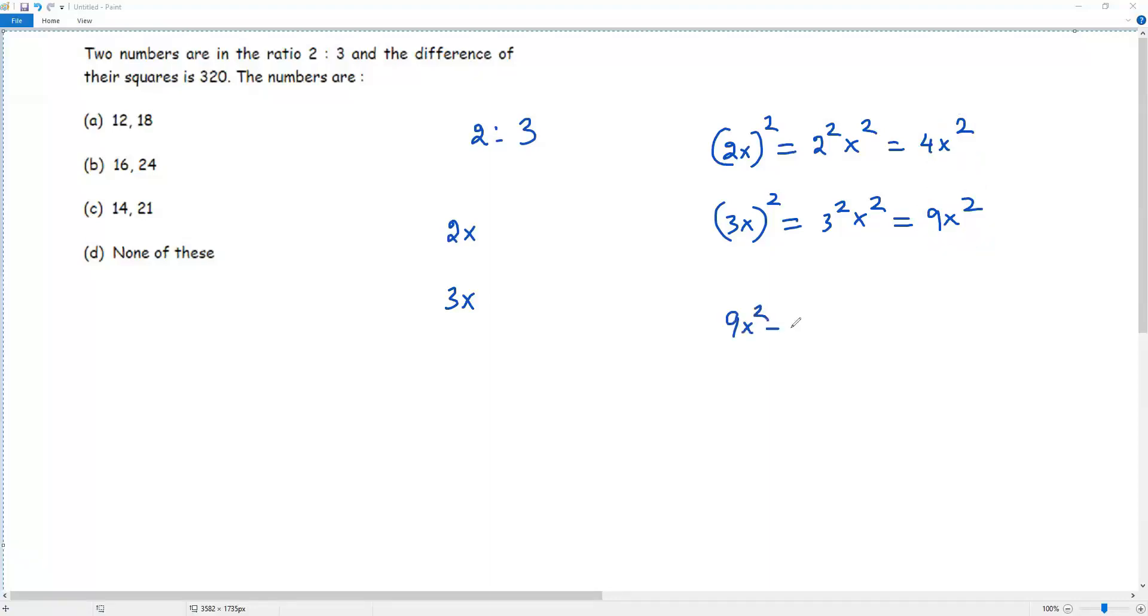So I get 9x square negative 4x square. So this gives you the difference of the squares of two numbers. According to the question, the difference of the squares of the numbers is equal to 320.